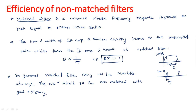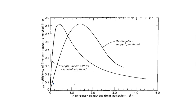When B×τ equals 1, we call it a matched filter; otherwise, the nearest value to 1 is preferred. There are two types of filters discussed here: a rectangular-shaped passband filter and a single-tuned RLC resonant passband filter. These two filters have better efficiency compared to all other filters.